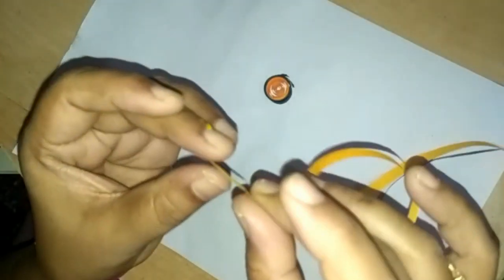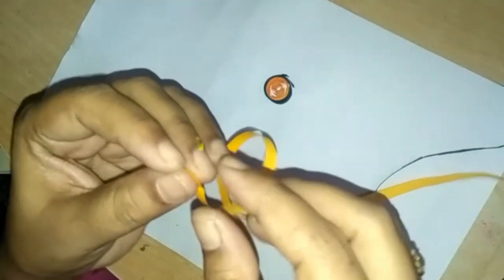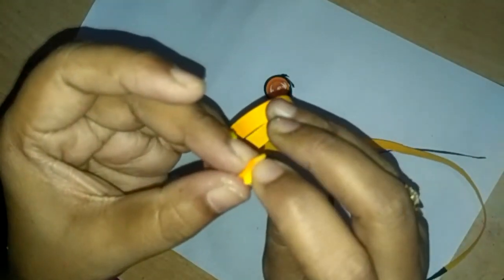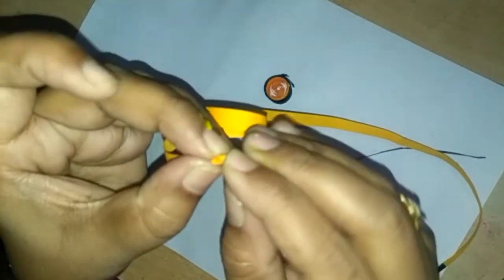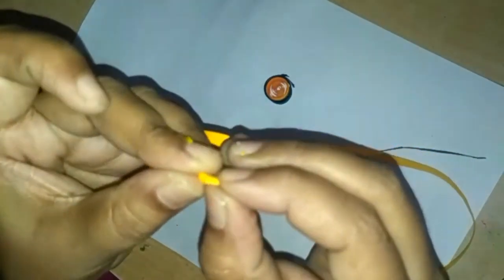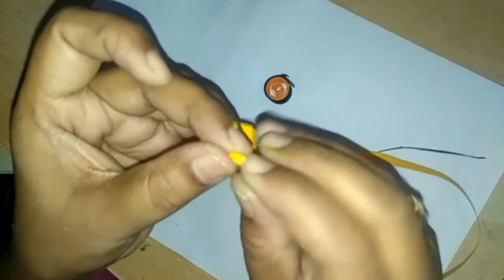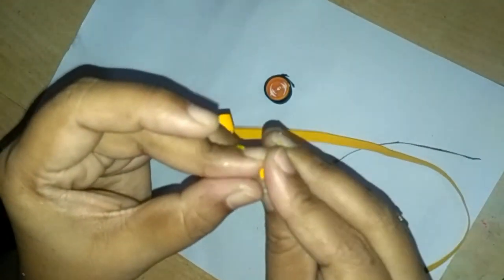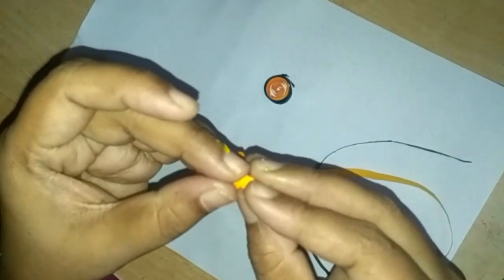I take another strip now. I show you again how you can make a roll without quilling pen. Observe me carefully. Hold it with fingers and rotate in one direction.